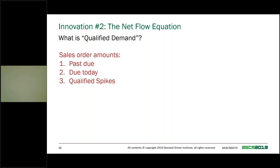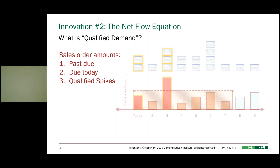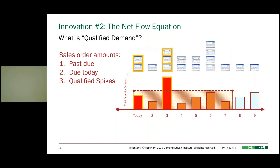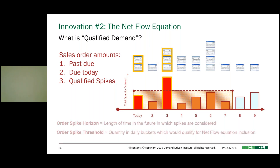What is qualified sales order demand? Qualified demand is the sales order amounts that are past due, due today, and qualified spikes. A qualified spike involves an order spike horizon — a length of time in the future to look for spikes — and an order spike threshold, which is the quantity in daily buckets due on that day that qualifies to be included in the net flow equation. In the diagram: nothing past due, some items due today, and on day three, total items due exceed the order spike threshold, so we include that as well.